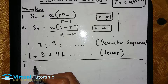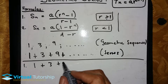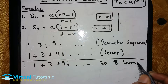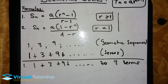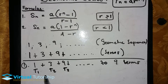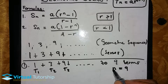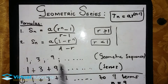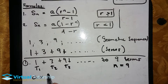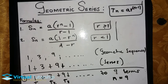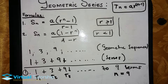Let's start with the first example. We have 1 plus 3 plus 9, all the way up to 9 terms. This is the first example. So this is term one, term two, term three, all the way up to nine terms. So n is equal to 9. Just like in a geometric sequence, a1 is equal to the first term, so a1 is equal to 1.